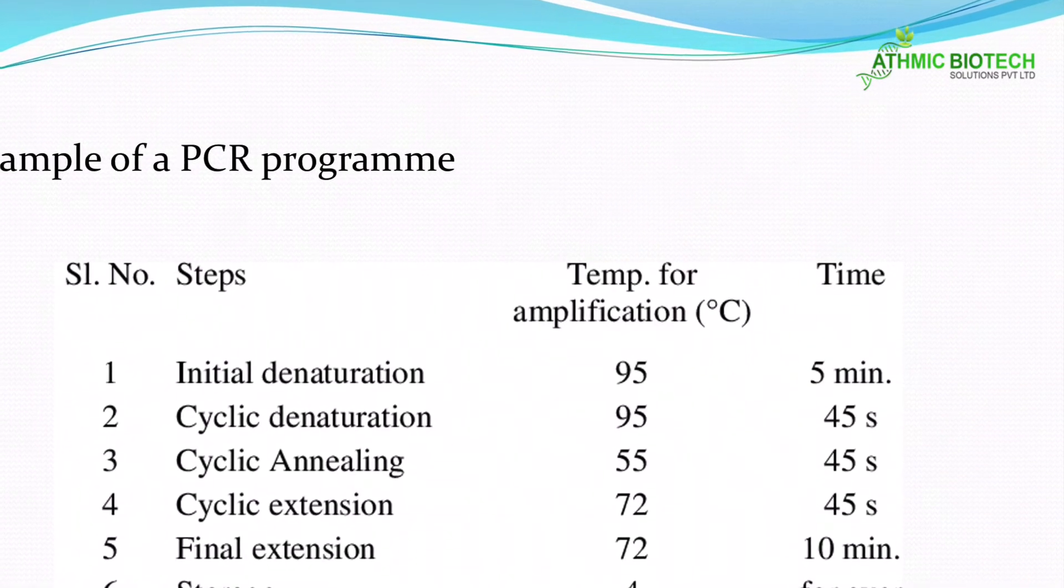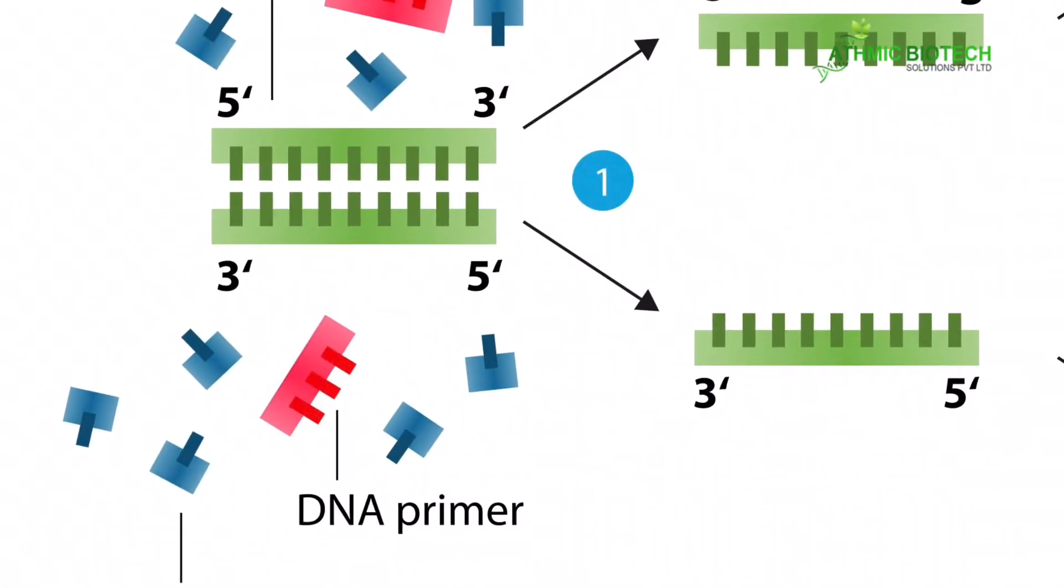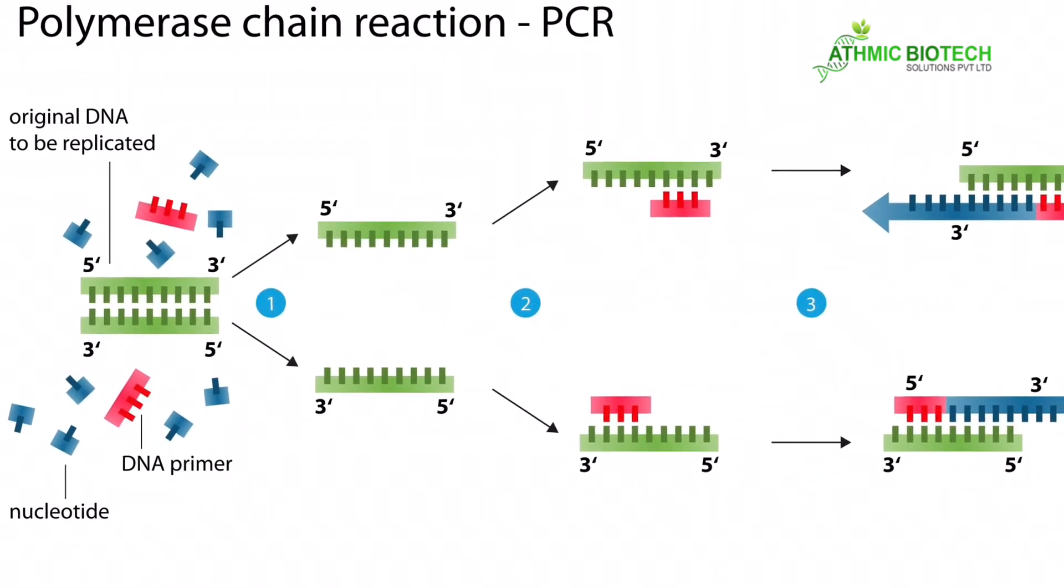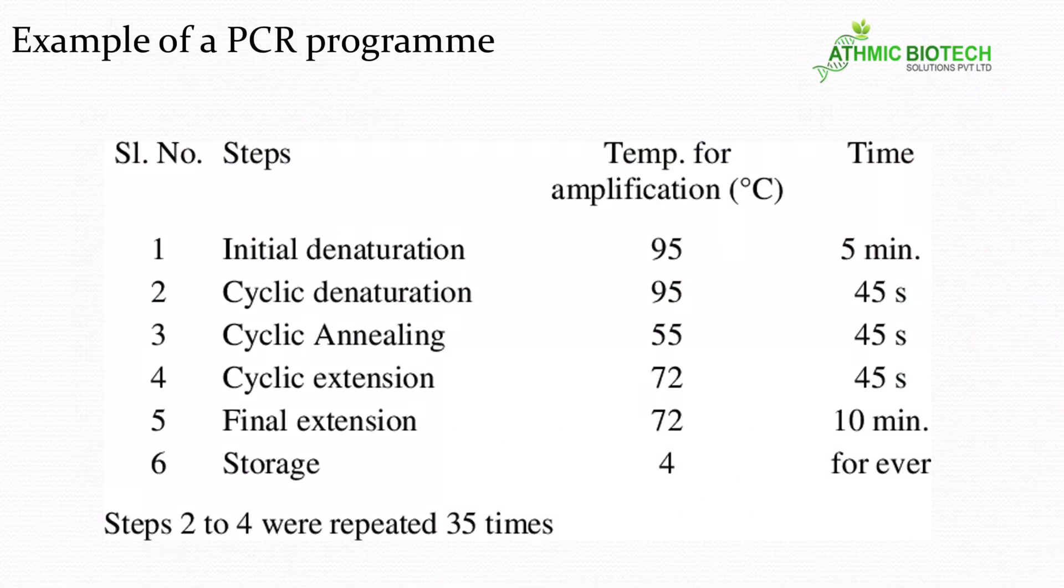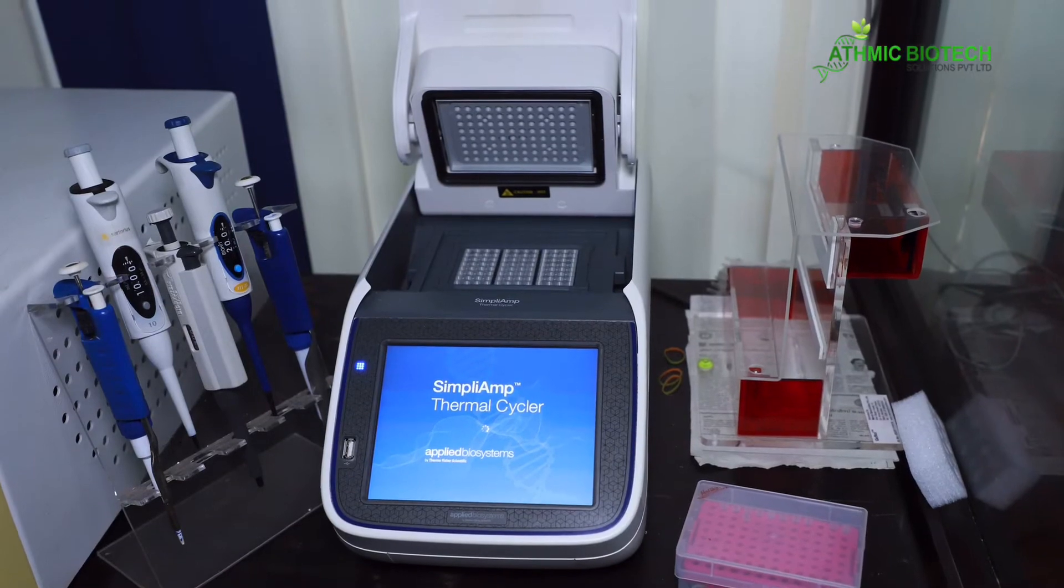And this is an example of a PCR program. There will be an initial denaturation step - 95 degrees Celsius for five minutes. And we will go into cyclic denaturation. Inside the cycle there will be a denaturation step, then the third step is primer annealing, and then extension. From step two to four will be repeated 35 times. Each time the number of DNA will be doubled. And there will be a final extension time - 72 degrees Celsius for 10 minutes, and then 4 degrees Celsius forever. This template can be utilized for setting any PCR program using Taq polymerase.